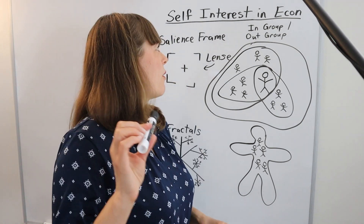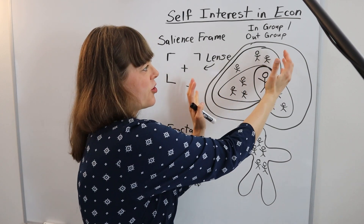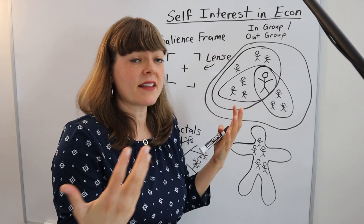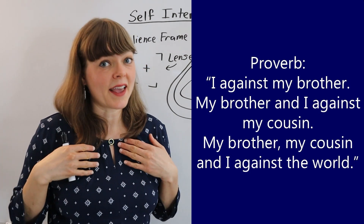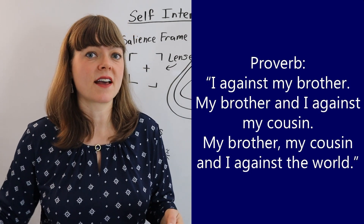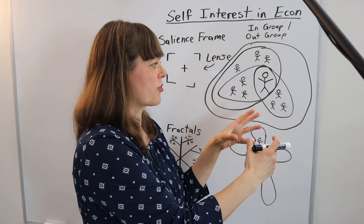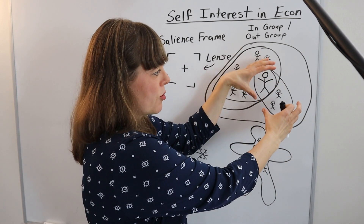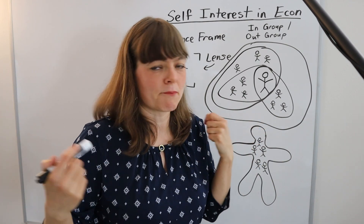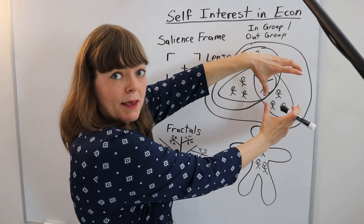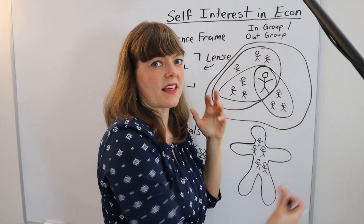If we think about self-interest as operating on the boundaries of an in-group/out-group frame — acting in support of the in-group in a way that could be highly altruistic, but against the out-group where interests conflict — there's a proverb that captures this: 'I against my brother; I and my brother against my cousin; I, my brother, and my cousin against the world.' Within any group there's competition, but when that group gets threatened from outside, the members come together against that out-group.